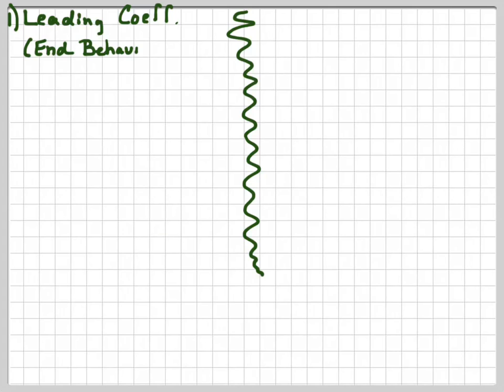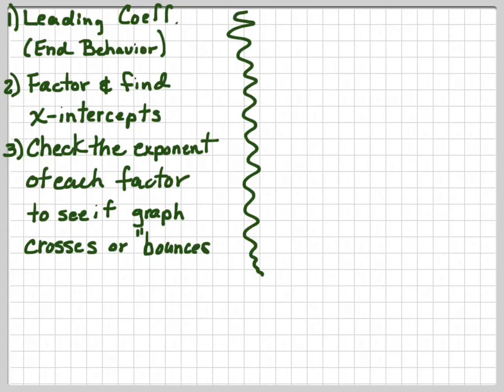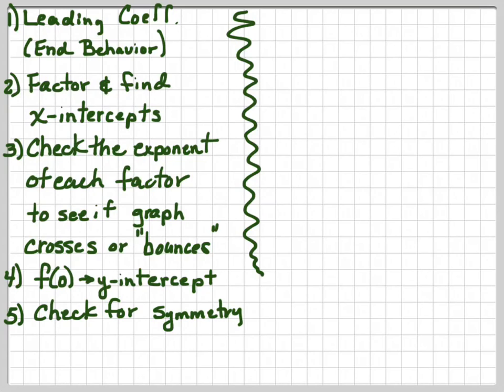Okay. Here are the steps that we're going to use to kind of sketch out these graphs. We're going to first of all look at the leading coefficient to check out the end behavior. Then we're going to factor and find the x-intercepts. And then we're going to check the exponents of each factor to see if the graph crosses or bounces. If it's an even exponent, it bounces. If it's an odd exponent, it will cross the graph. And then we want to find the y-intercept, which means substitute zero for x. And then we want to check for symmetry, which we just did. See what happens when you substitute a negative x for each one of your x's. And then find the maximum number of turning points.